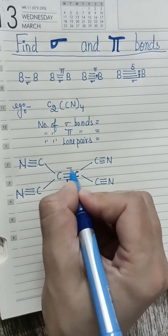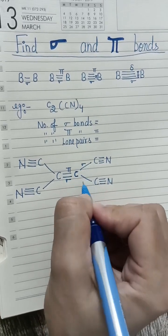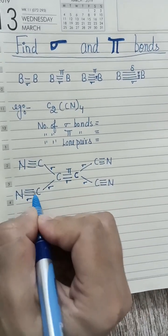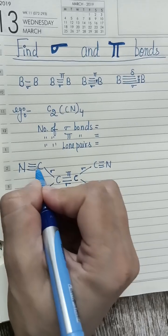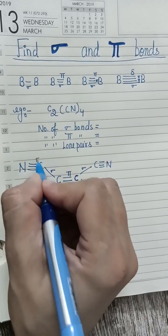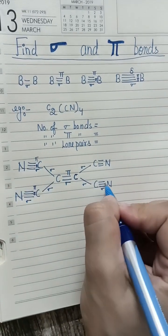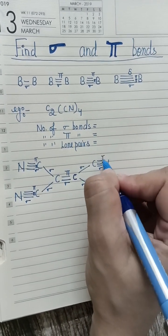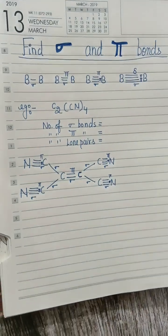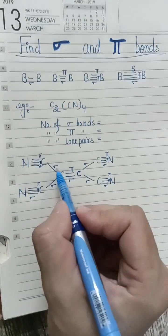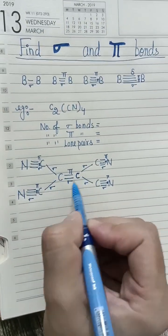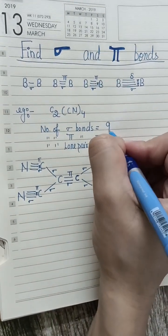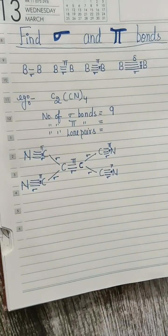We already know: in a triple bond, one is Sigma, another is Pi, and there are two Pi bonds. The single bond is also Sigma. So in a triple bond: Sigma, Pi, Pi. Let's count the Sigma bonds: one, two, three, four, five, six, seven, eight, and nine. So there are nine Sigma bonds present in this molecule.